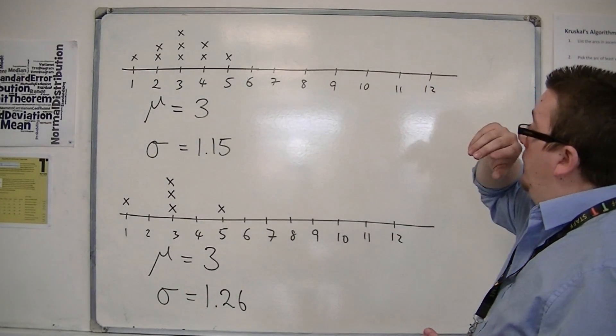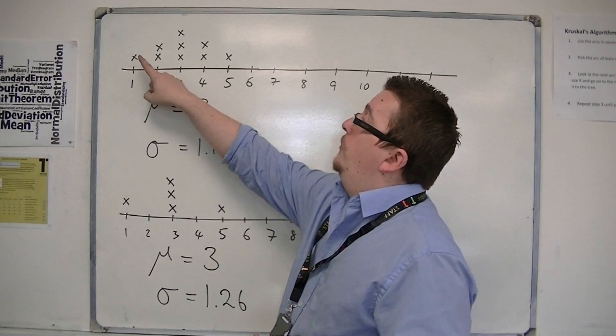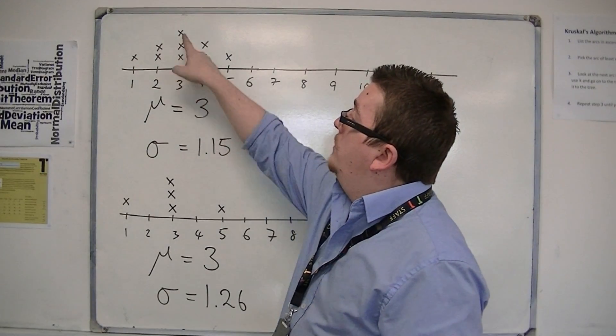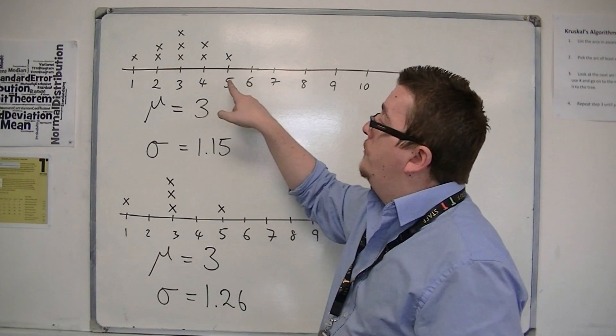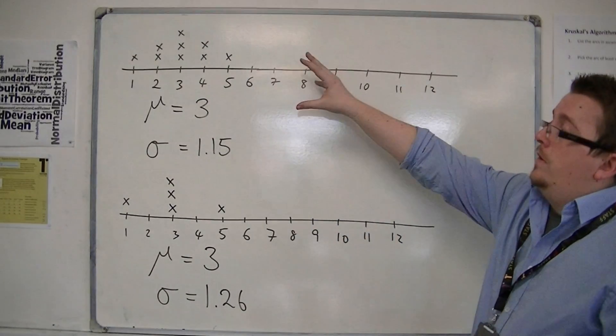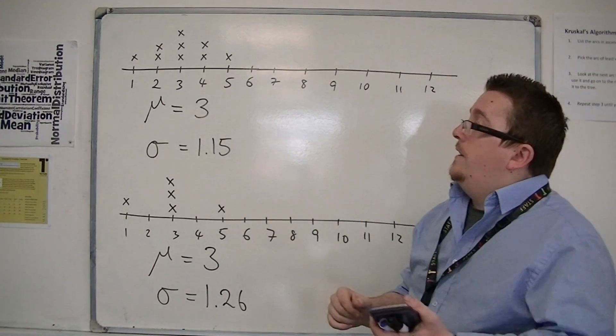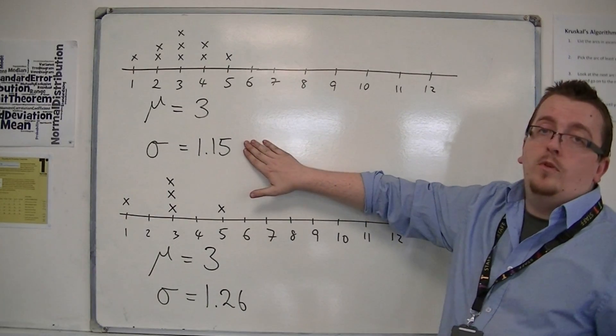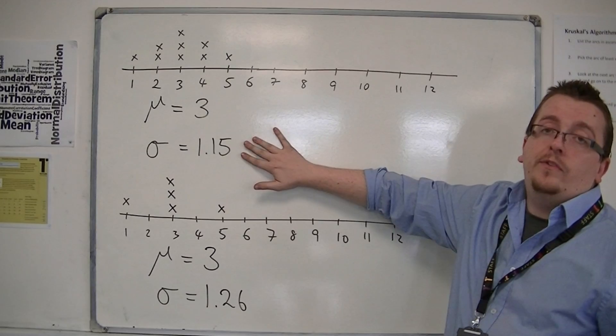What we have here is a number line and I've got some data, so I've got one one, two twos, three threes, two fours and one five. So this is what it's representing here. And you can work out the mean and the standard deviation, three and one point one five to three significant figures.